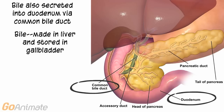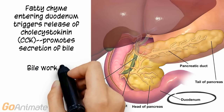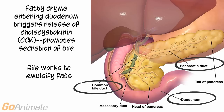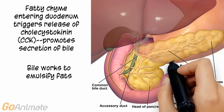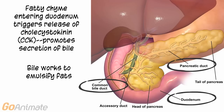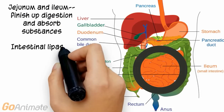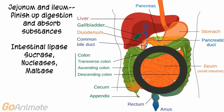Bile is secreted into the duodenum via the common bile duct, which ends in a small sphincter called the hepatopancreatic sphincter. Bile is made by the liver and stored in the gallbladder. Fatty chyme entering the duodenum triggers the release of cholecystokinin, or CCK, which promotes the secretion of bile. Bile works to emulsify fats.